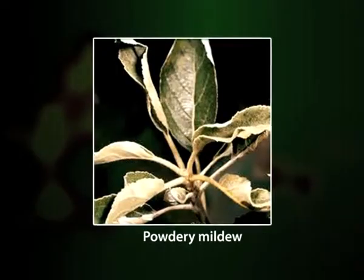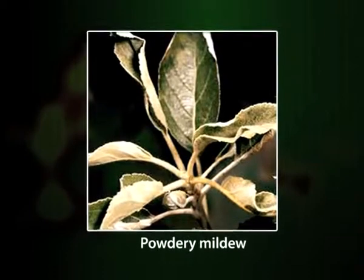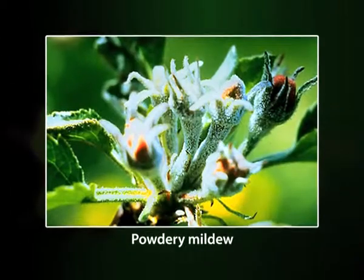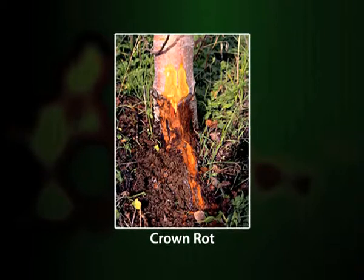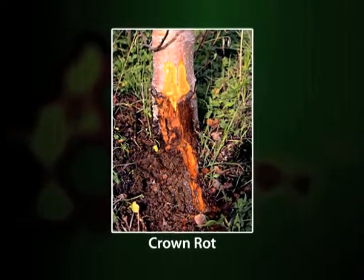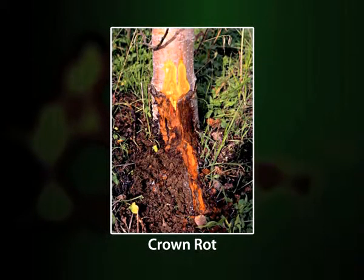Powdery mildew is caused by Podosphaera leucotricha and is one of the most important diseases of apple, especially in humid climates. Although it usually does not damage the fruit to any great extent, it weakens the tree and can kill seedlings, especially in nurseries. The disease attacks the foliage and young shoots; infected plant parts are removed and destroyed, and infection can also be controlled by chemical sprays. Crown rot is caused mainly by the fungus Phytophthora cactorum; zoospores in the soil infect the bark of the tree at or near ground level and can kill large trees by girdling the main stem, especially in poorly drained areas. It is possible to avoid infection of the scion by grafting about 20 to 30 centimeters above soil level.